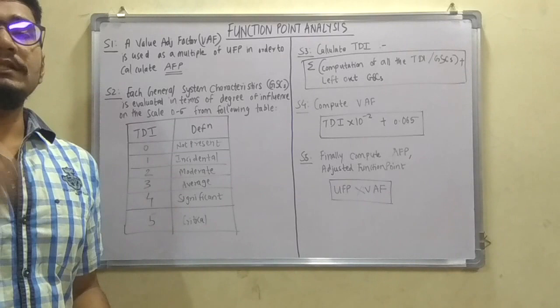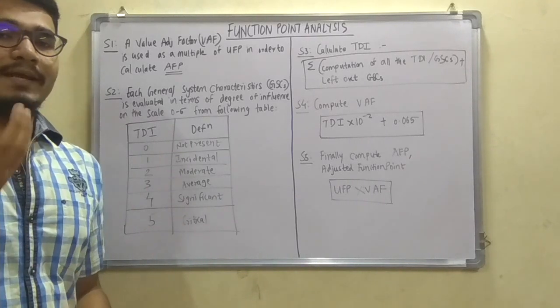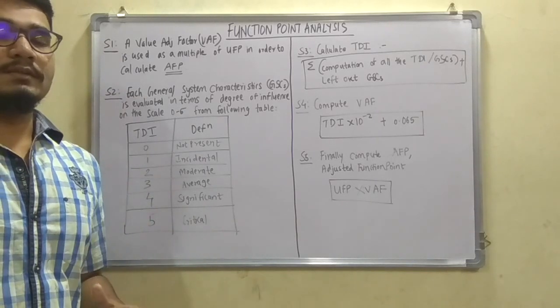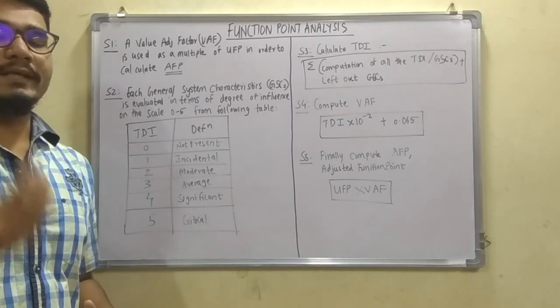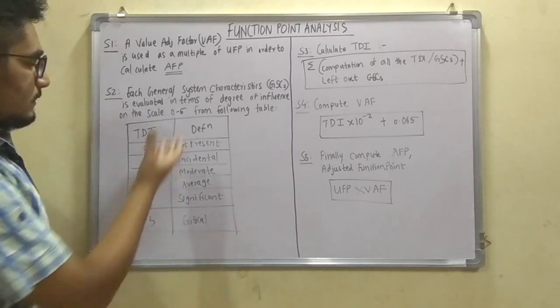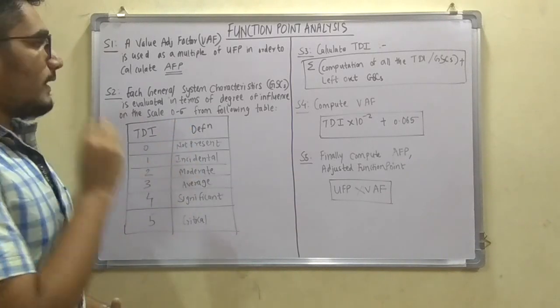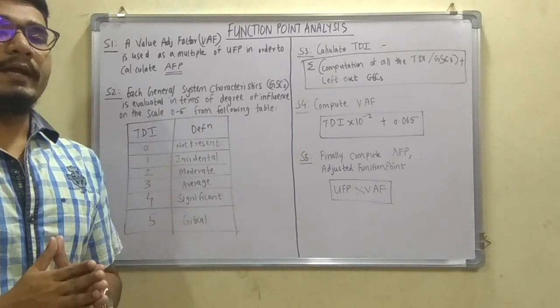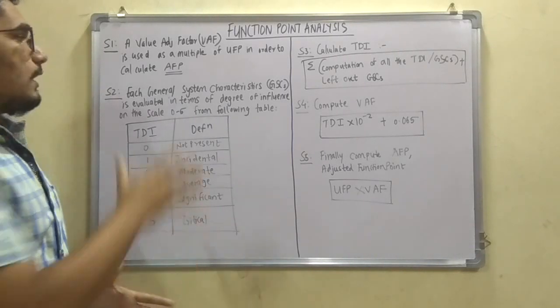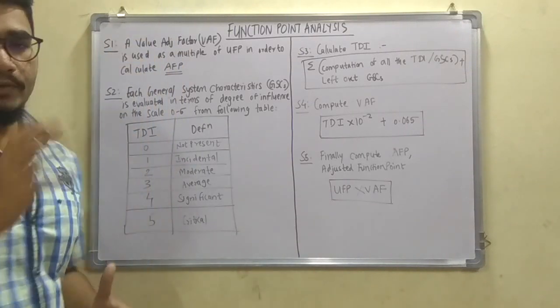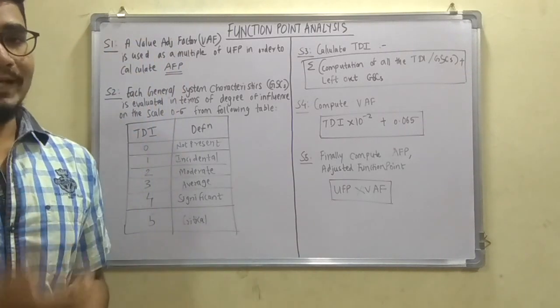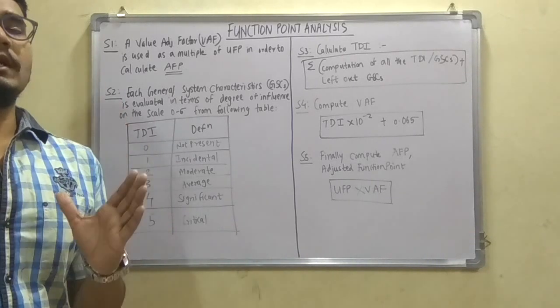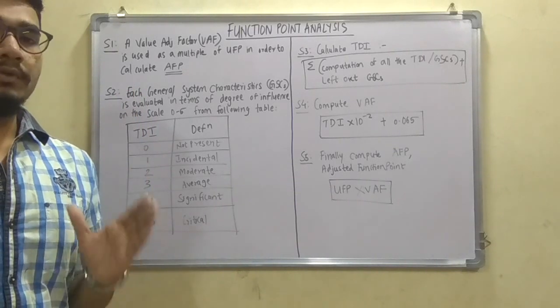Now what is UFP? UFP is the unified function points that we get by executing from each of the test cases. Parameters would be given that is critical, incidental, like this you can see here. So based upon this we will calculate the UFP and by summing up those we get, and by multiplying the VAF we get the actual AFP, that is the adjusted function point. So this is the very first step, just a clear idea of what you have to gather.